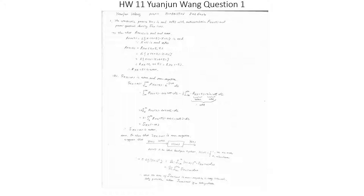We know that R_xx(τ) equals R_xx(t+τ, t), which equals the expected value of x(t + τ) times x(t). Switching the terms, this equals the expected value of x(t) times x(t + τ), which equals R_xx(t, t + τ). This is equal to R_xx(−τ). So we have proved that R_xx(τ) is even.